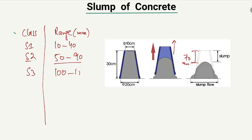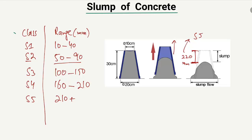S4 concrete has a slump value of 160 to 210 millimeters. The last class is S5, where the range is 210 millimeters and above. For example, if the slump height is 220 millimeters, we call this S5 class. S5 has its own specific purposes and applications.